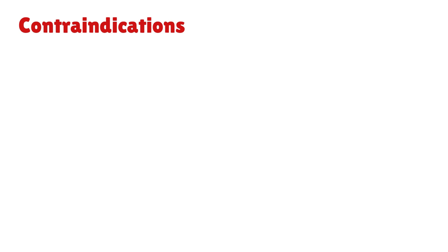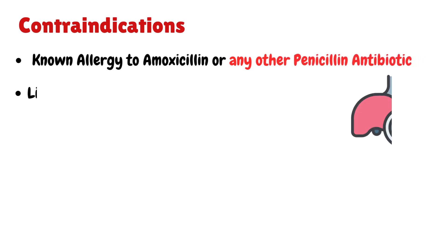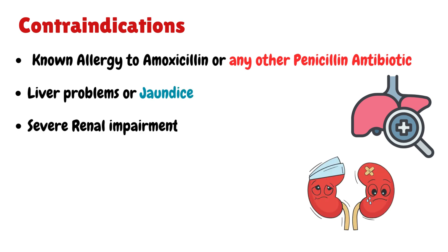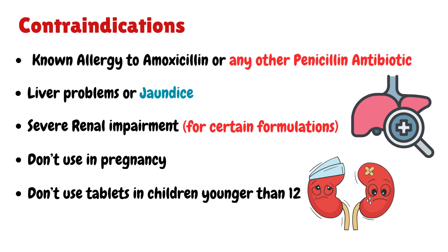Contraindications of Augmentin: Augmentin should not be used in patients who have a known allergy to amoxicillin or any other penicillin antibiotic, a history of liver problems or jaundice with previous use of amoxicillin/clavulanate, or severe renal impairment for certain formulations. Do not use in pregnancy, and do not use tablets in children younger than 12.